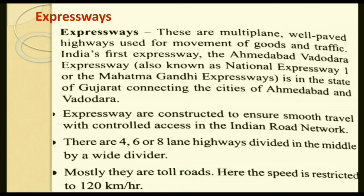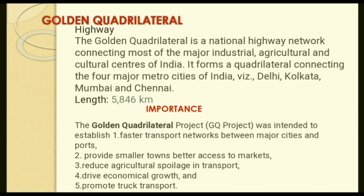Golden Quadrilateral connects the four corners of the country — the four main metropolitan cities of Delhi, Kolkata, Mumbai, and Chennai — with a total length of 5,846 kilometers. It passes through most agriculture and industrial areas. It provides smaller towns better access to markets so local people can sell their goods easily. It also reduces agricultural spoilage in transport by reducing the time taken to carry agricultural goods from one place to another.